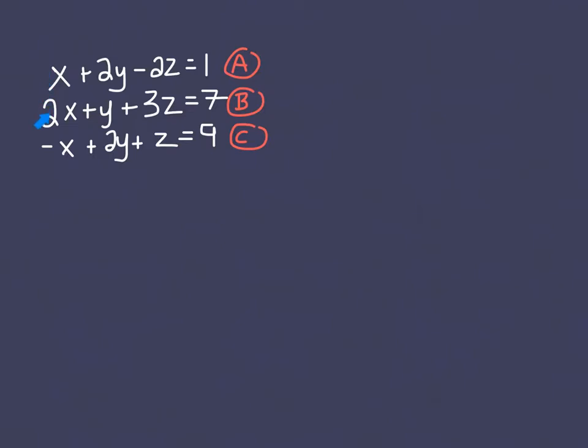So I'm going to eliminate X in equations A and B, and I'm going to eliminate X in equations A and C. I could have done B and C, but I see that there's already an additive inverse with X and negative X, so that will be even faster.